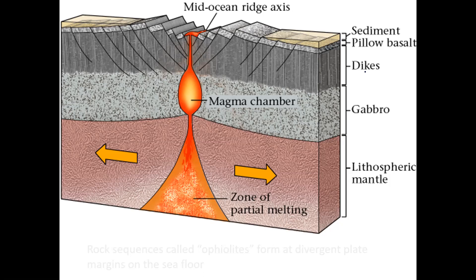If the magma makes it up a little higher and solidifies, the rock that forms is gabbro — mafic in composition. These are intrusive rocks. The next things you see are structures called dikes, which are igneous intrusions. As the ocean crust spreads, it will crack, magma enters those cracks, and when it solidifies we get a dike. The rock type is diabase, which is intermediate between gabbro and diorite.